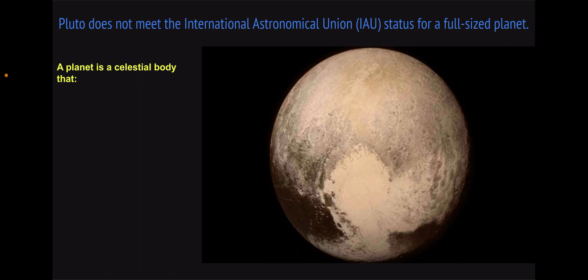In 2006, the IAU, or the International Astronomical Union, came up with new criteria for an object in space to be considered a full-size planet.